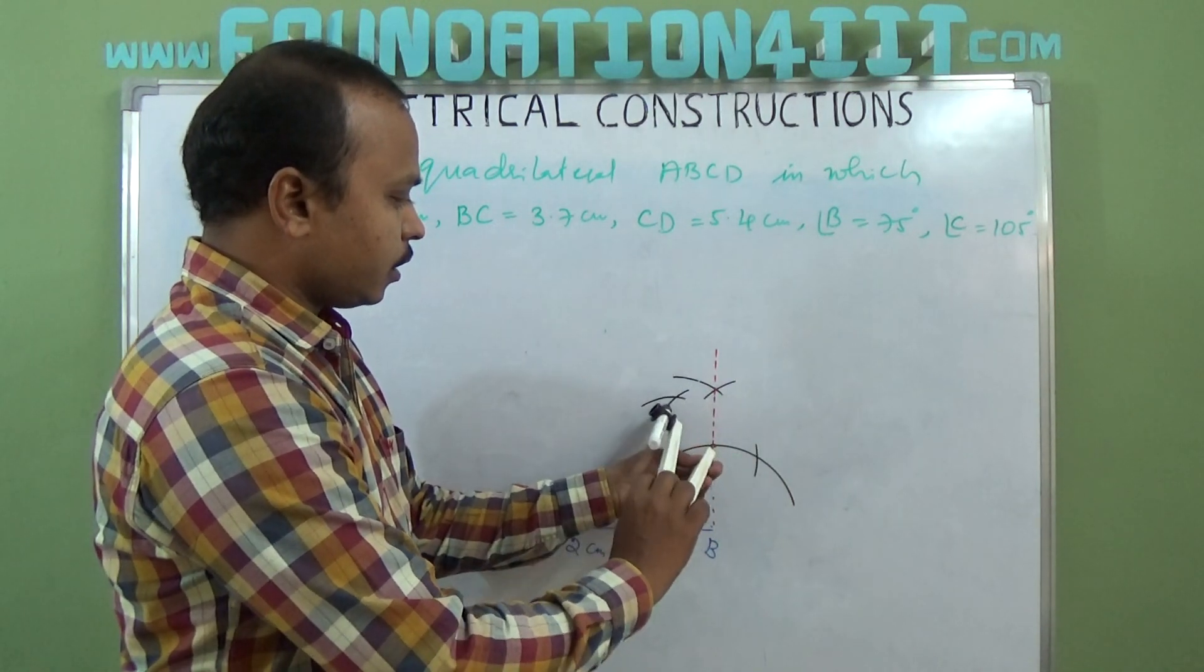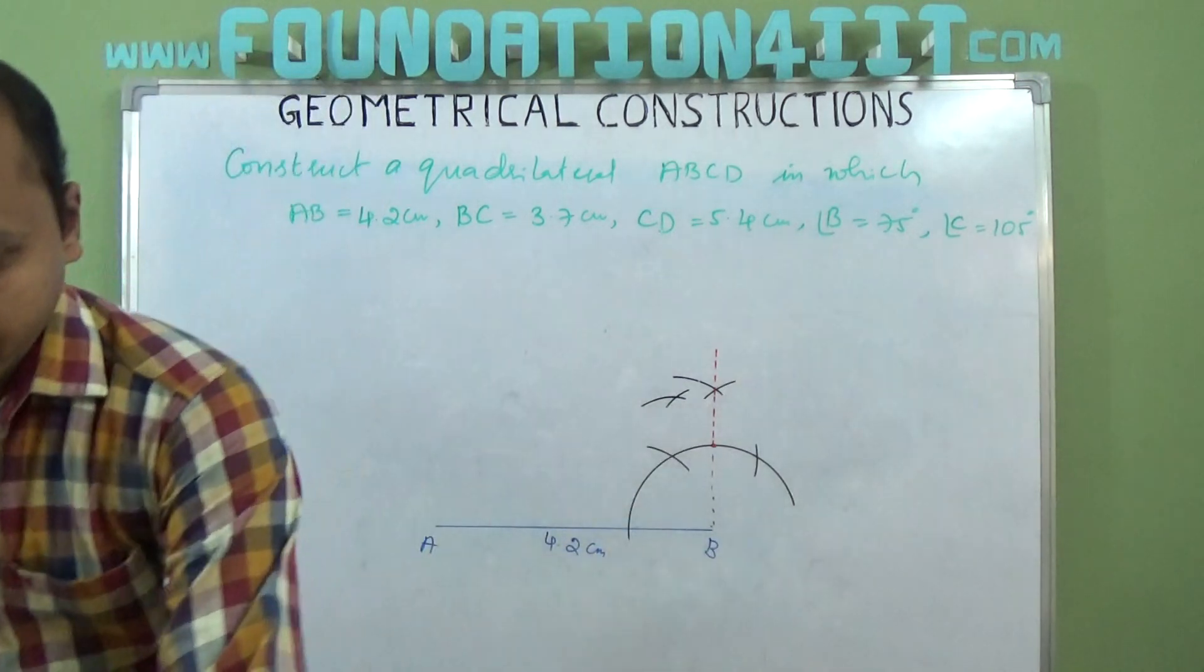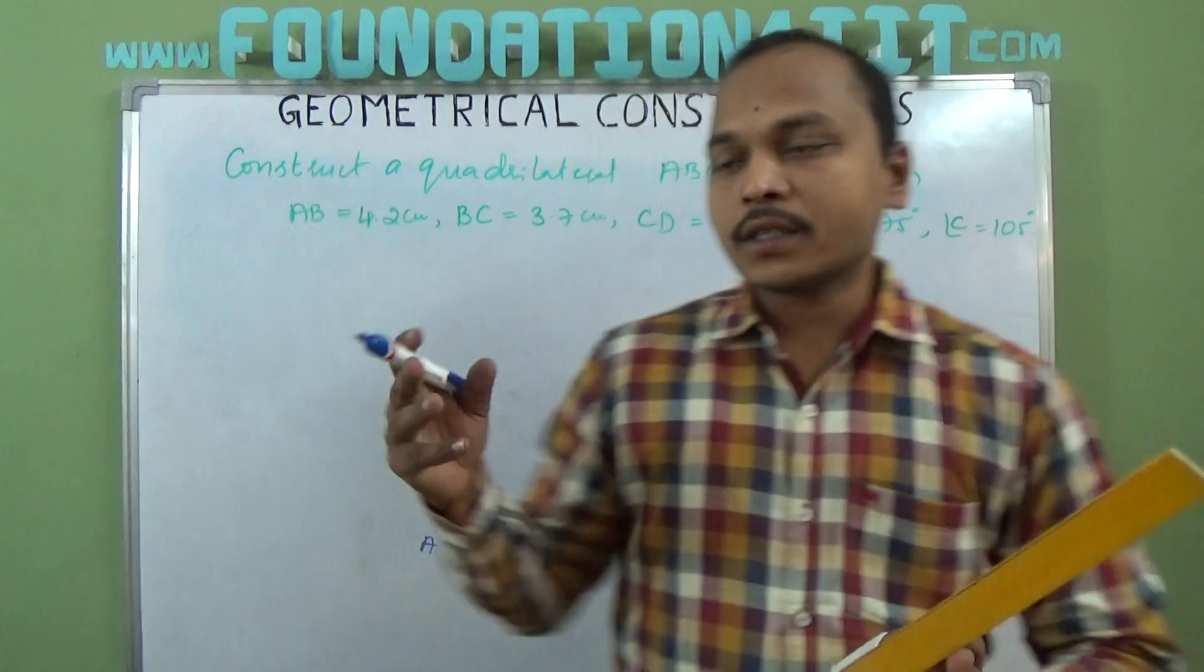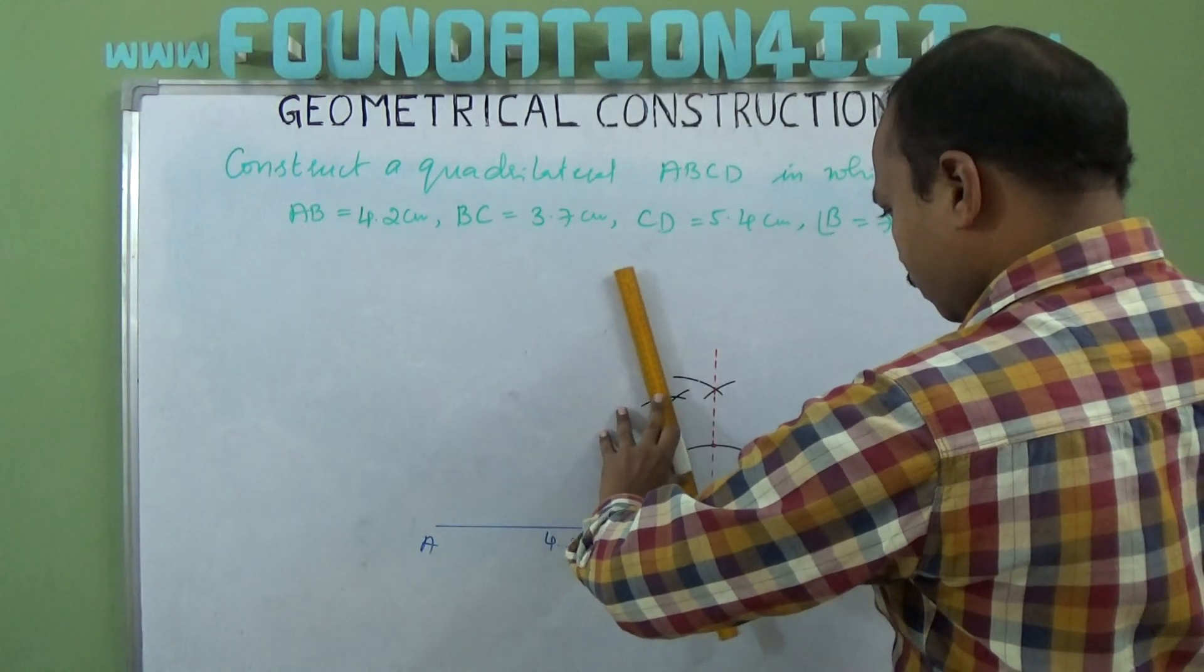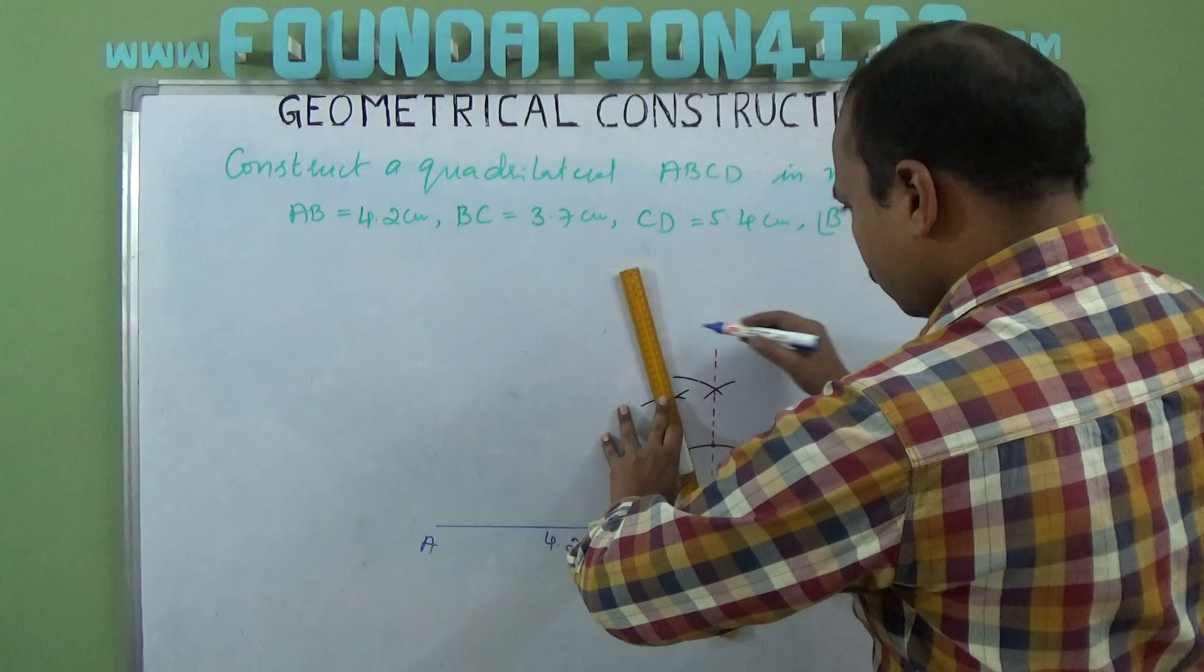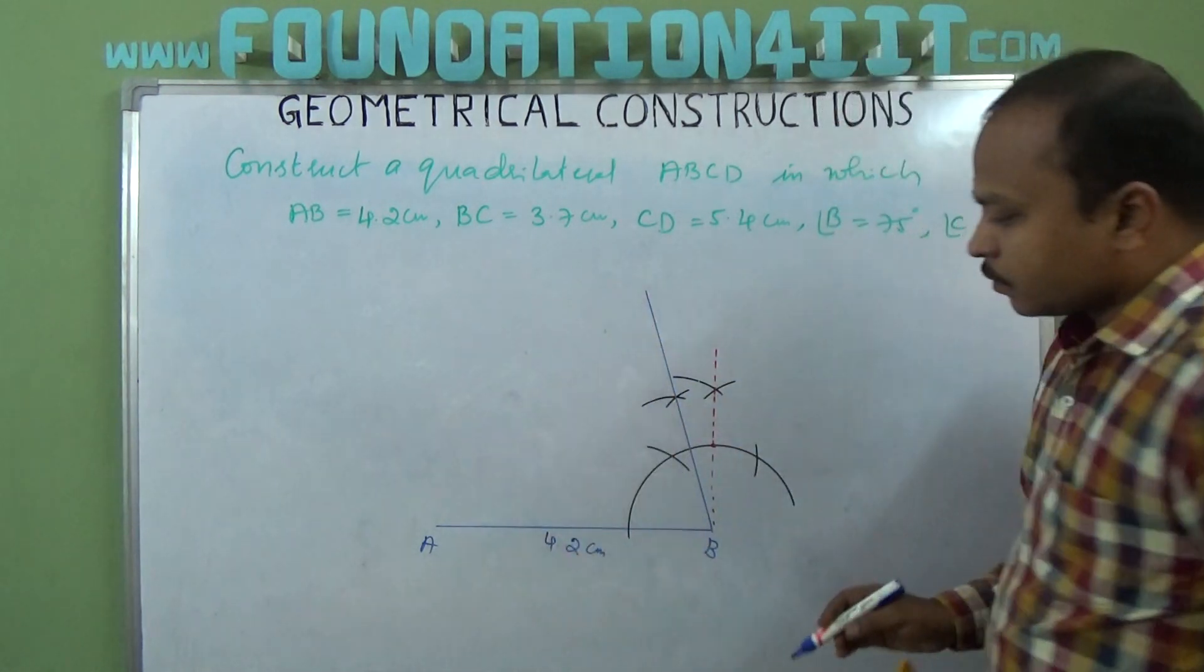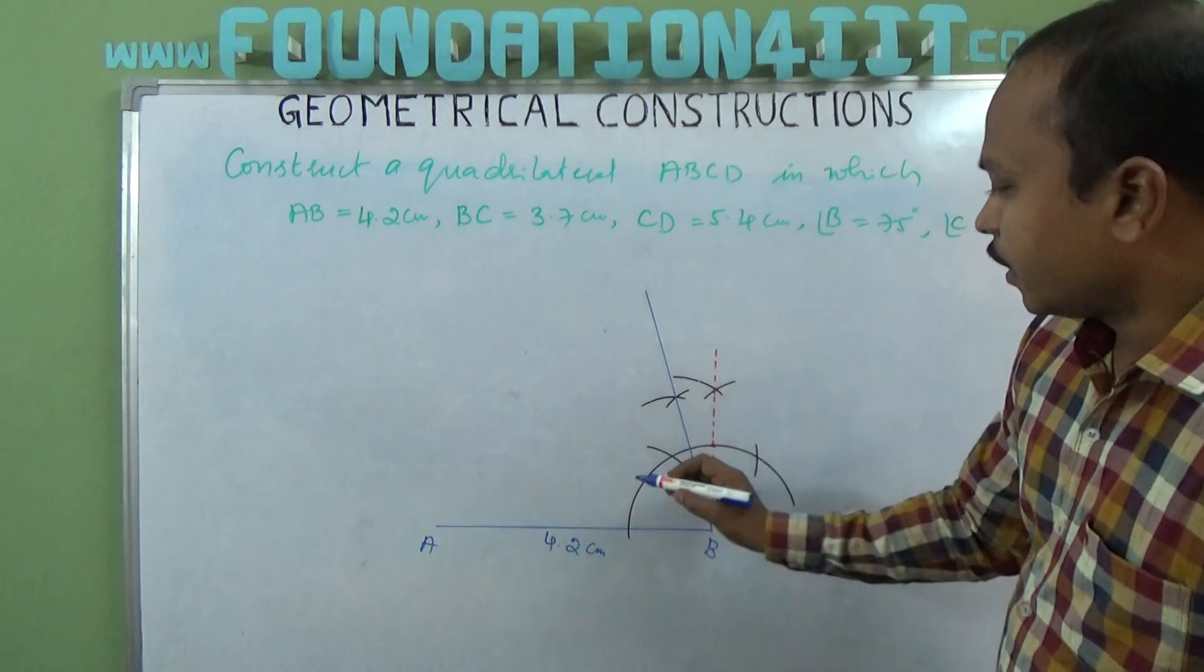Now between 60 and 90, if you bisect, 75 will come. Extend this line, so angle B is 75 degrees now.